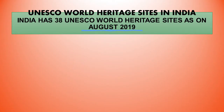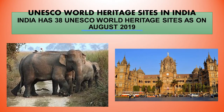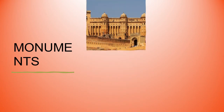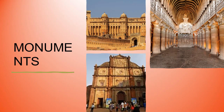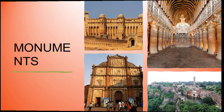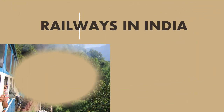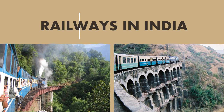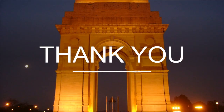Now we will study about the UNESCO World Heritage Sites in India. India has 38 UNESCO World Heritage Sites as of August 2019. Railways in India — India is famous for its railways, which have made transportation easy, and they were also introduced by the Britishers. Thank you, I hope the chapter is clear to you.